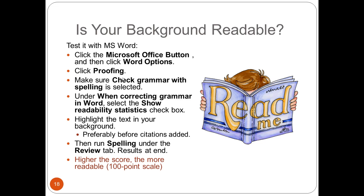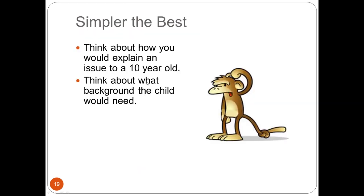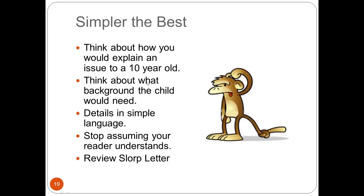This is going to be important for your background, because simpler is better — you want everybody to be able to understand it. Think about how you would explain it to a 10-year-old. Stop assuming the reader understands or even remembers your case. A judge might have 1,000 different cases. Federal court judges might have 200 to 400 cases — they're not going to remember every single one before them.